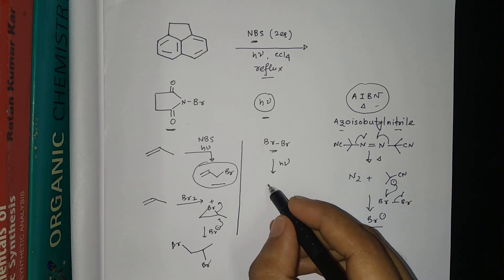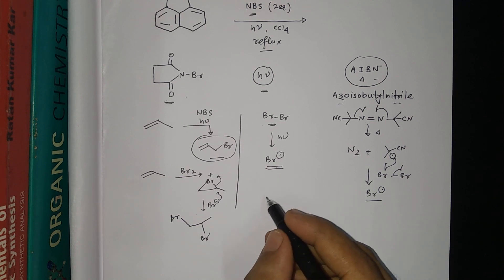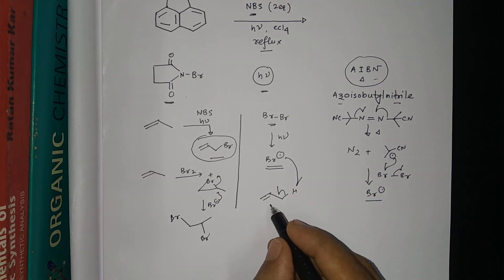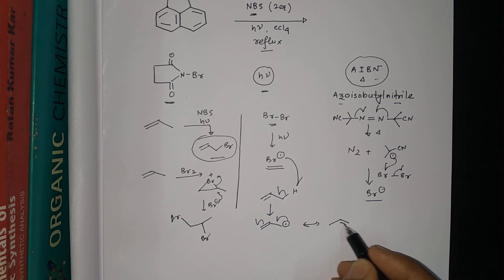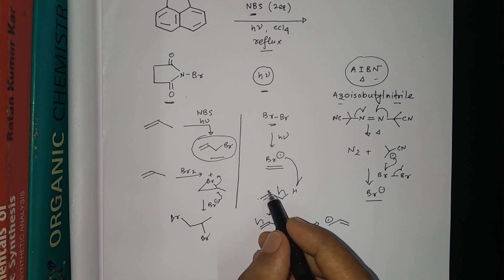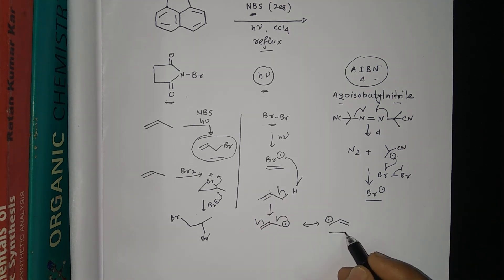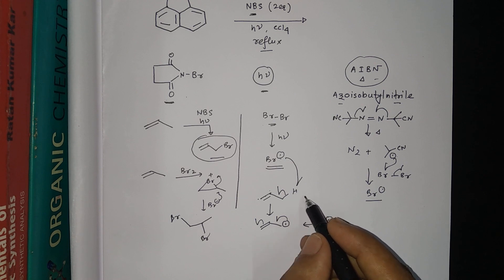The Br• radical reacts with the allylic hydrogen, abstracting it to produce an allylic radical. The allylic radical is very stable because it has a resonating structure — it can go for resonance. If the radical were to form at a non-allylic position, there would be no resonance stability, so it is not favorable. The reaction specifically gives the stable allylic radical.